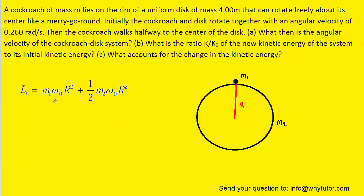Thus, the initial angular momentum can be set up as follows. We have the cockroach value right here and then the disk right here. Once again, notice the factor of one-half for the disk.